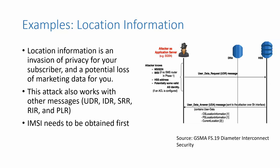Location information is a big one and one of the easy attacks. It's a way for an attacker to track where your subscriber is. Your subscribers will be pretty upset when they find out their privacy is gone and somebody can track where they are. This is happening today — it costs very little money. You can go onto the internet and pay about $150 US per month to have a constant track of a cell phone and know where people are going without their knowledge. Using the IMSI obtained previously, the attacker sends a User Data Request message to the HSS and gets location information back. Messages like the UDR, IDR, and SSR can all return location information.